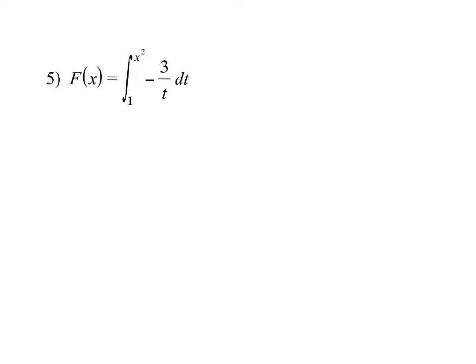So the instructions for this problem are the same. We're trying to find capital F prime. Notice this time that top spot is filled by a function of x, x². The other thing I want you to pay attention to is the bottom is still a constant. Now, it does not matter what that bottom number is. As long as it's a constant, we apply the theorem. And so we're going to do the same thing here, but there's a twist. After we take the x² and put it where t is, we also have to multiply by the derivative of x², which is 2x.